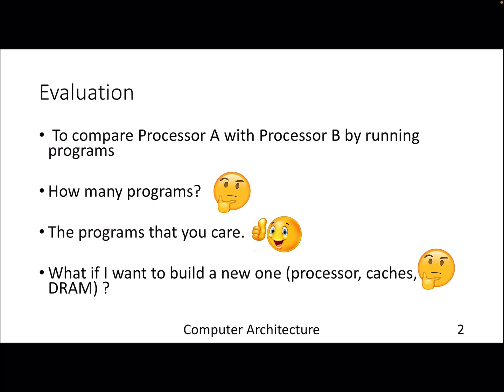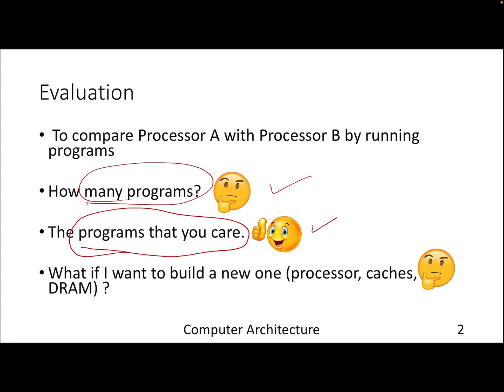What are the programs that we should use to evaluate the processors? Typically it should be the programs that we care about, the programs that we run on a daily basis. Then the question is how many such programs, and what if you want to build a new processor or make a small delta idea on top of a processor — caches, memory or whatever? How will you evaluate them? Will you go for building a chip or talk to commercial companies?